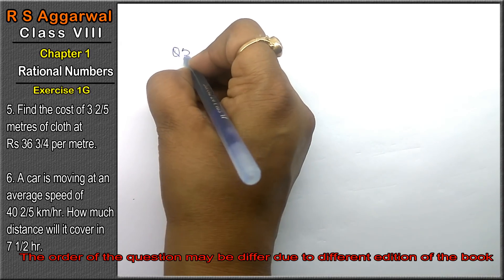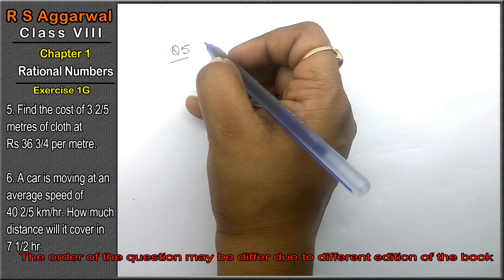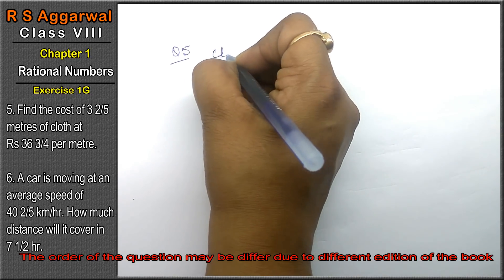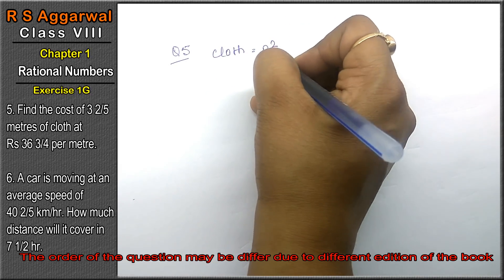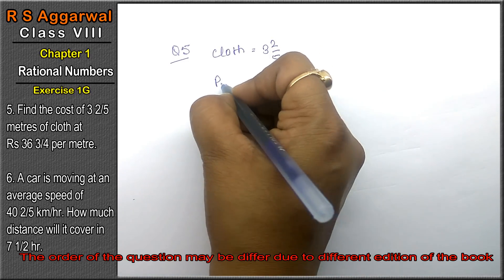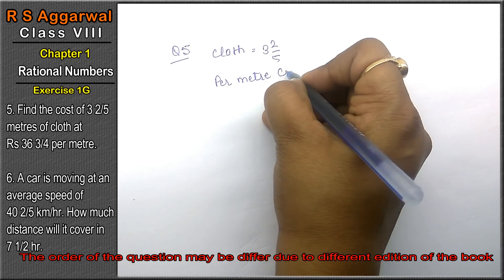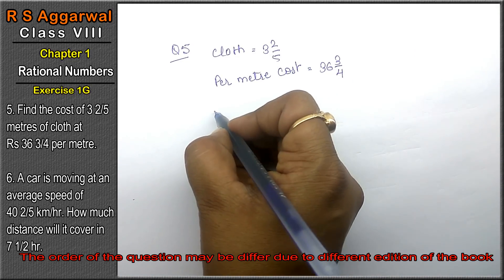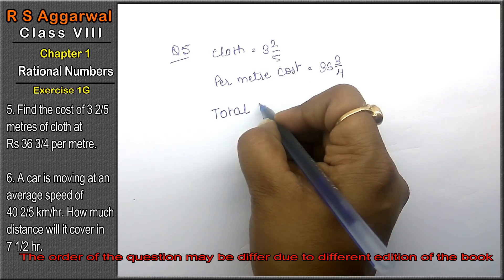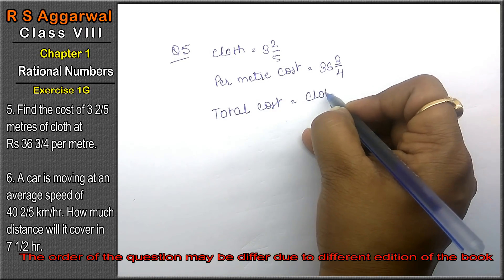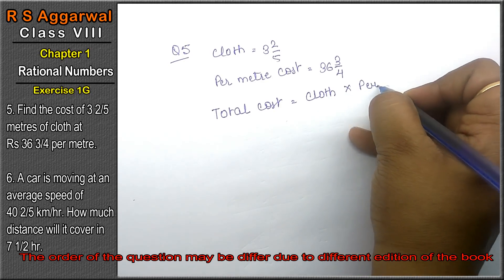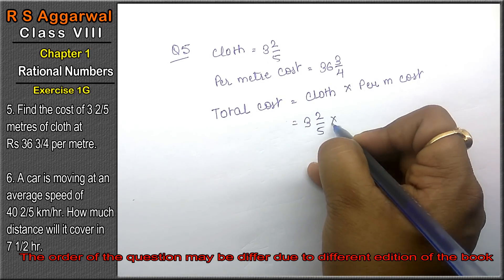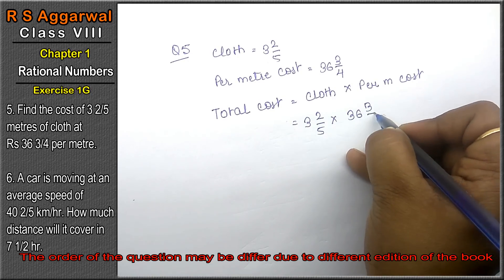Let's do question number 5 of exercise 1G on rational numbers. Question 5: Find the cost of 3 and 2/5 meters of cloth. The cost per meter is Rs. 36 and 3/4. Total cost equals cloth length multiplied by cost per meter: 3 and 2/5 multiplied by 36 and 3/4.